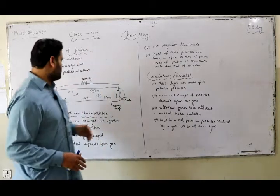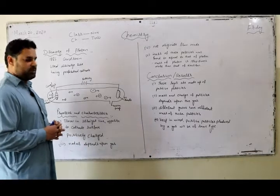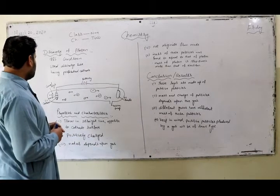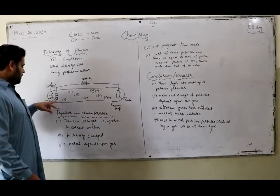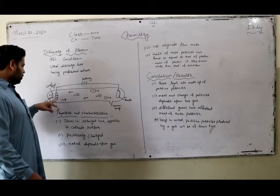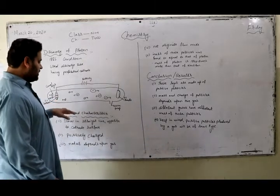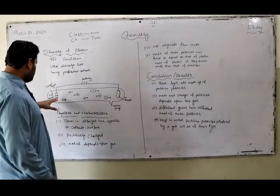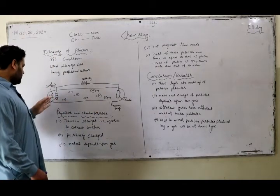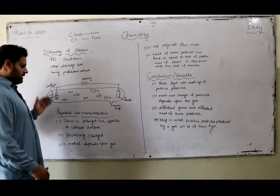Or positive rays. For this he performed another experiment. He used perforated cathode in discharge tube. Perforated means the cathode which have holes in it. He observed that these rays travel in straight line and pass through the holes of the cathode. These rays were named as canal rays.